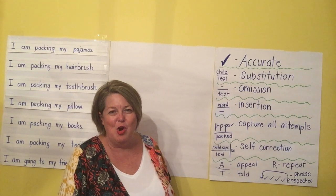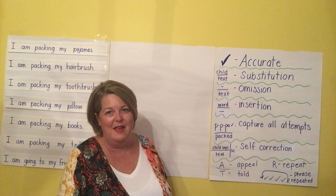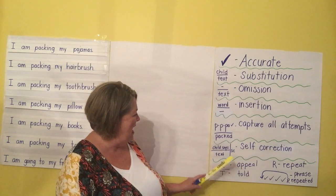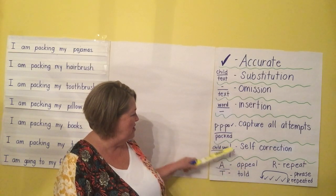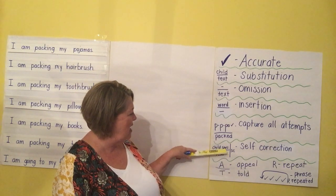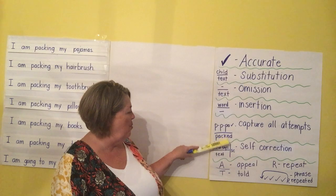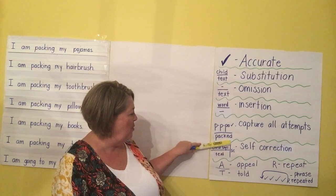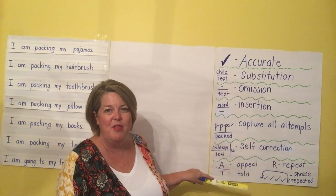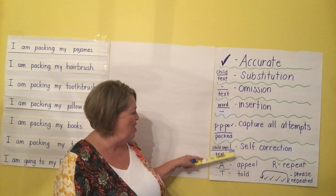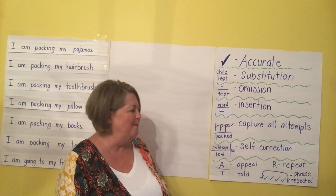The next type of error is a self-correction — that's where they make an error and they immediately self-correct it, and it's coded with SC. You would write what the child says and then put the text underneath it. When they make the self-correction, you put a straight line down indicating that there was another action taken, and then you put SC to show that it was immediately self-corrected.